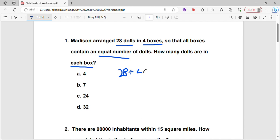So we would just do 28 divided by 4 and that gives us 7. So that means that when the 28 dolls are divided into 4 boxes so that the boxes contain an equal number of dolls, there would be 7 dolls in each box. So B is the correct answer.